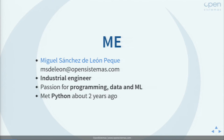A little bit about me as well. My name is Miguel Sanchez de Leon Peque. I'm an industrial engineer with backgrounds in electronics, automatic control, and computer science. I feel passion for programming, data, statistics, and machine learning. I started programming with Python about two years ago, exactly when I started working with OpenSystemas, and since then I've been gradually falling in love with this programming language.